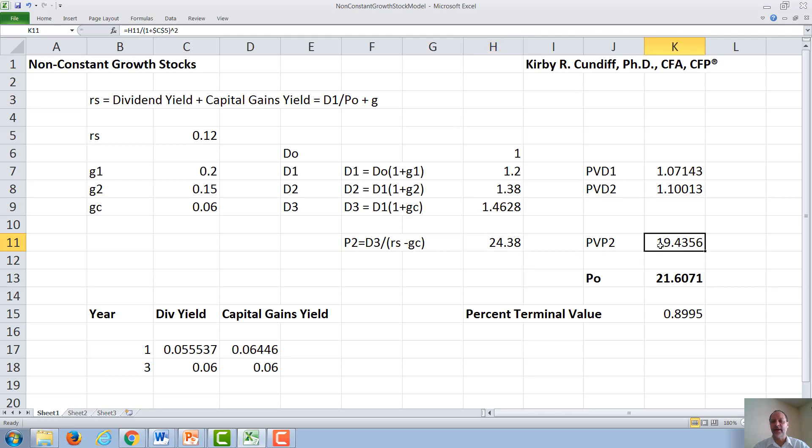The present value of that will then be 24.38 divided by 1.12 squared. So we have dividend D1 present value thereof, followed by the present value of dividend D2, and then the present value of the price of the stock if it was sold right after dividend D2 was paid. Summing up these two dividends and the terminal value, we get the value of the stock of $21.61.